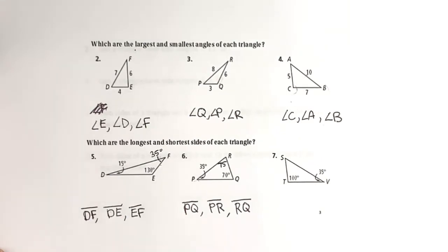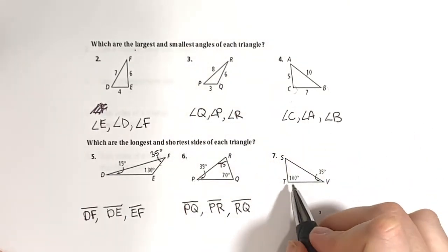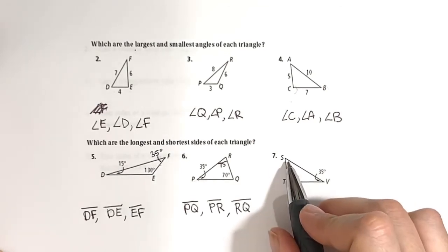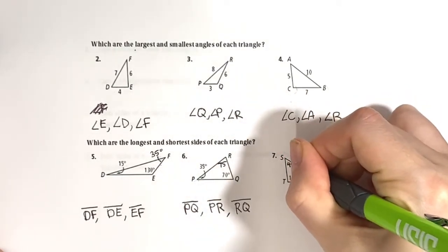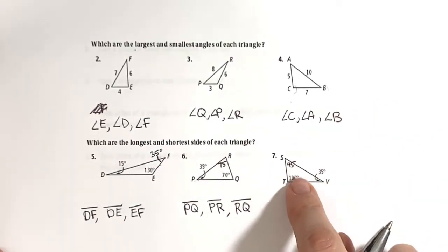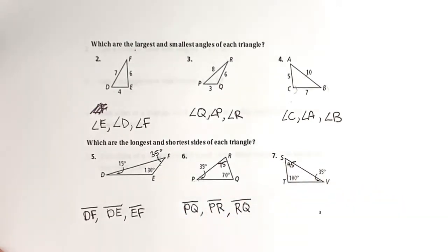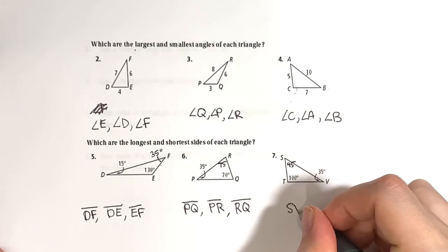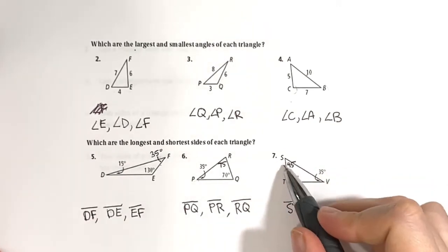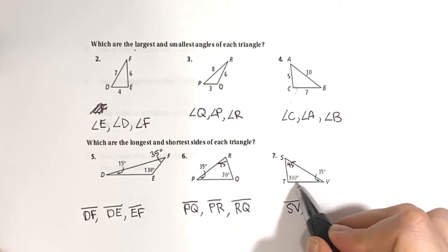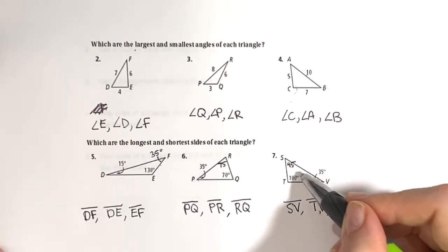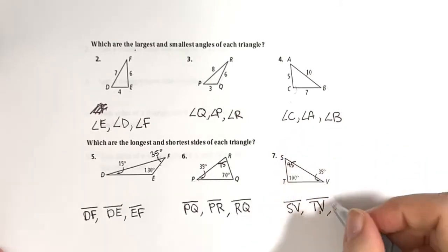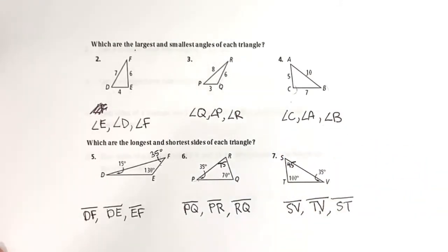Last ordering example: angles 100° and 35° given. Calculating the missing angle: 180 minus 100 minus 35 equals 45°. Since 100° is the biggest angle, side SV is the longest. The 45° angle gives side TV as the second longest, and the 35° angle gives side ST as the shortest.